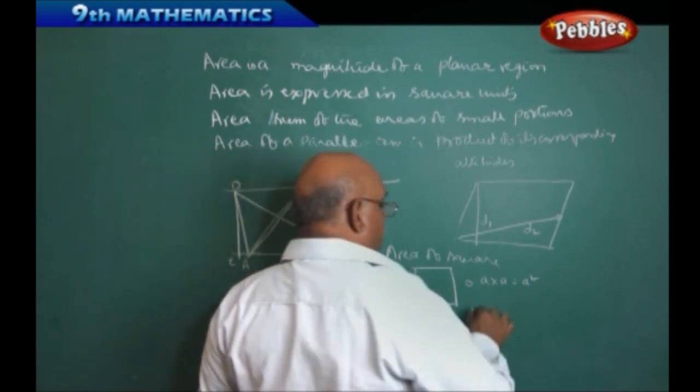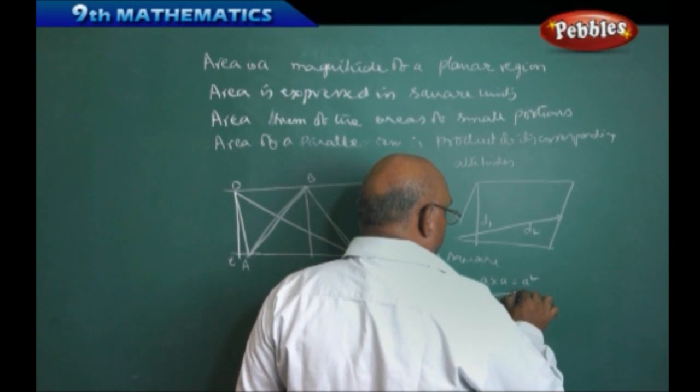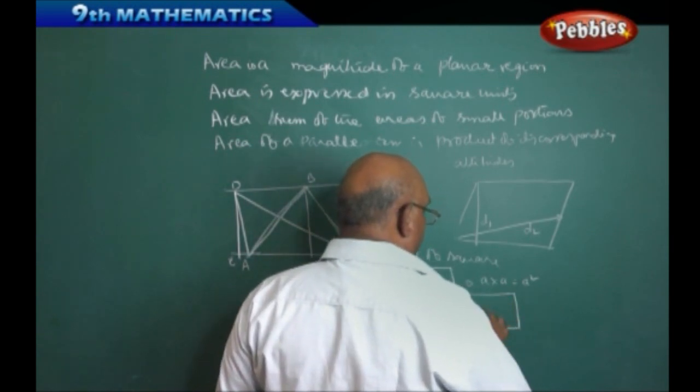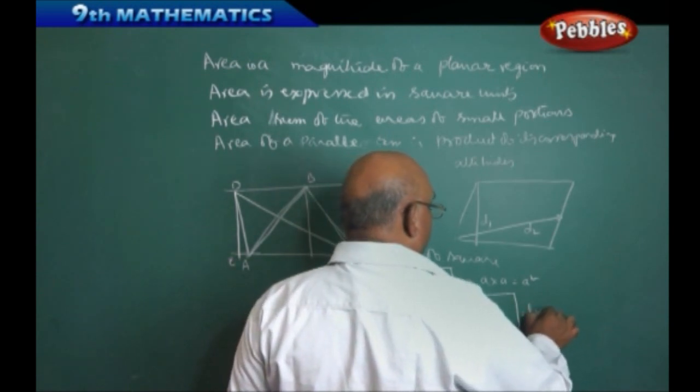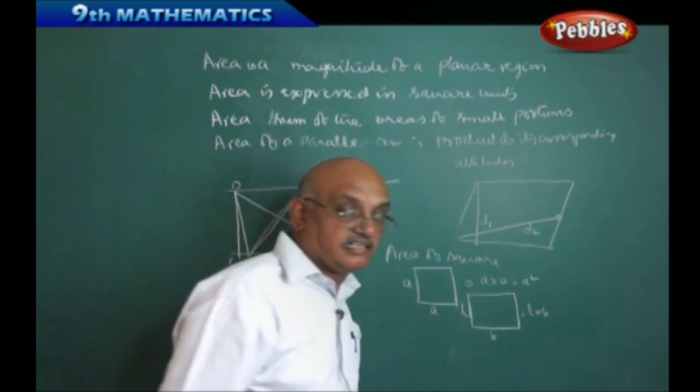Suppose if I want to find out area of a rectangle. Let us call it as L into B. Therefore, area of a rectangle is length into breadth is the area of the rectangle.